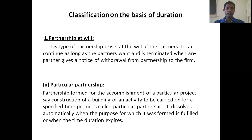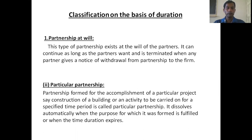Classification on the basis of duration: we have two types of partnership. First one, partnership at will. Second one, particular partnership. Partnership at will exists at the will of the partners — it can continue as long as the partners want and is terminated when any partner gives a notice of withdrawal from the partnership to the firm.